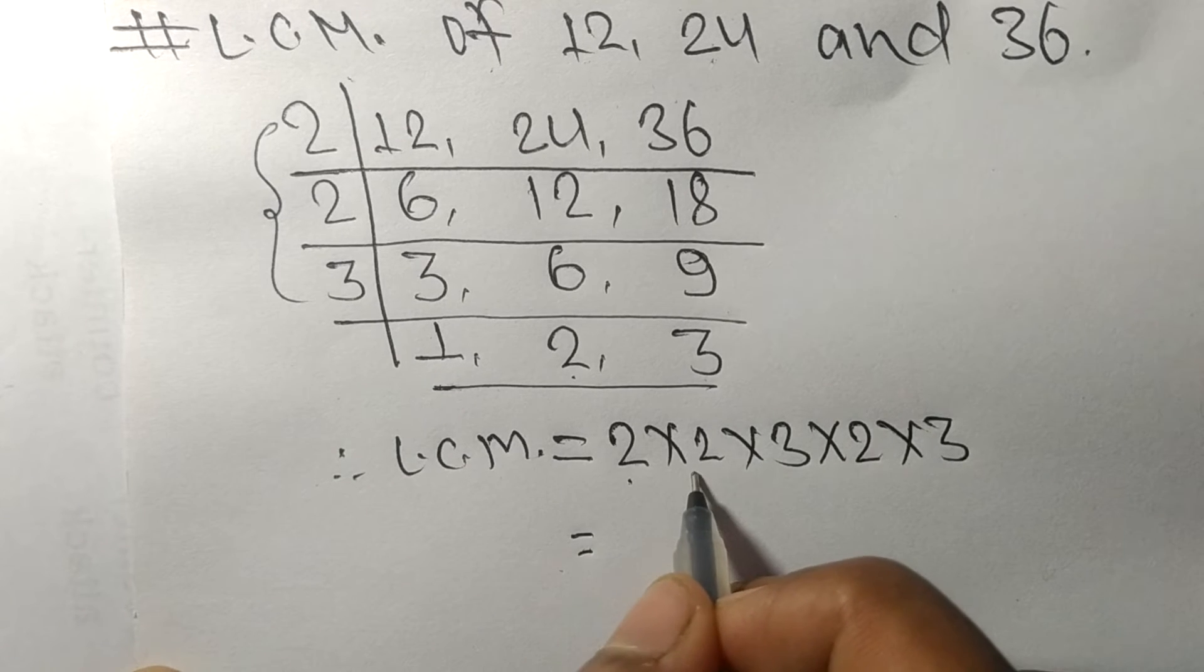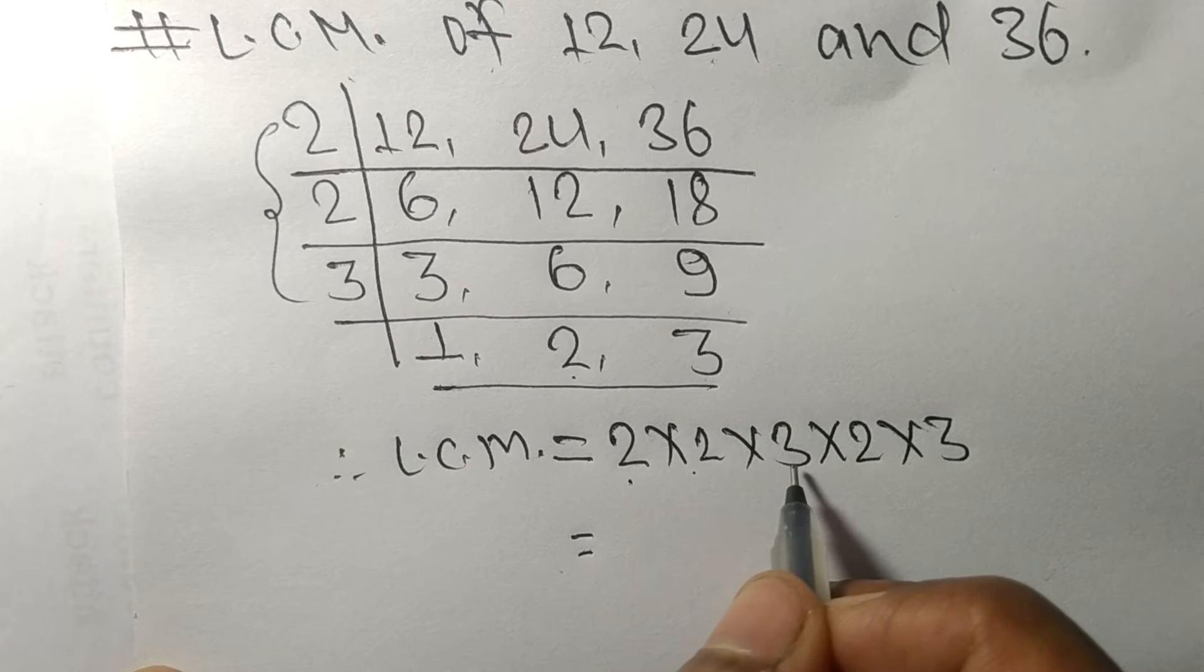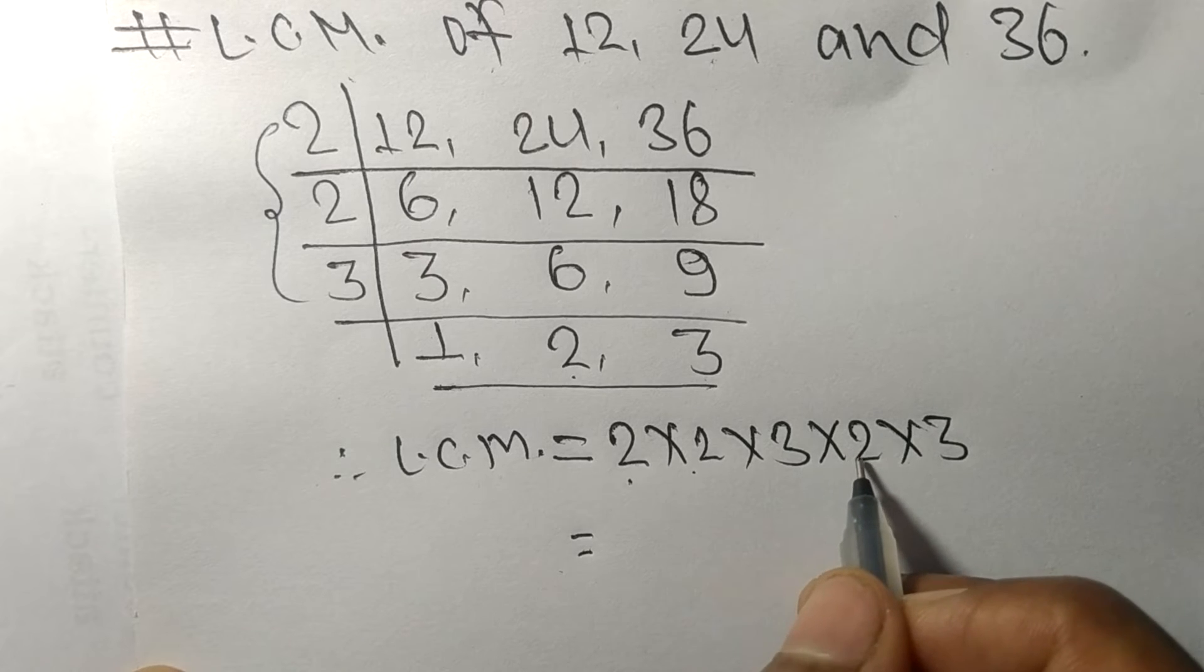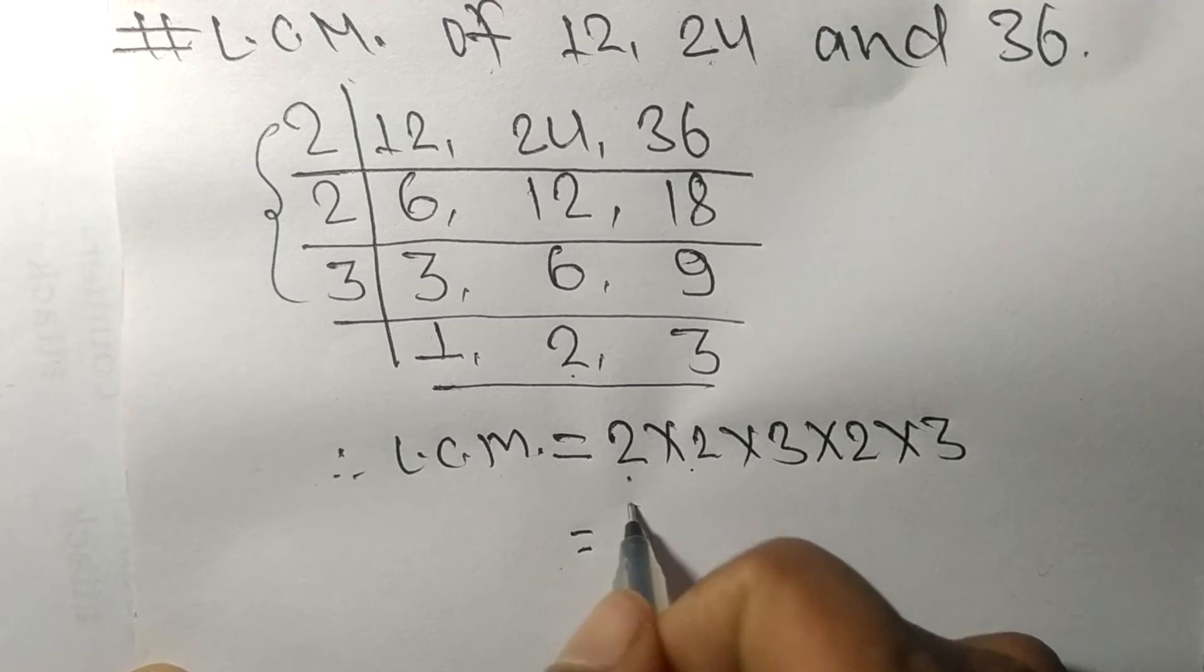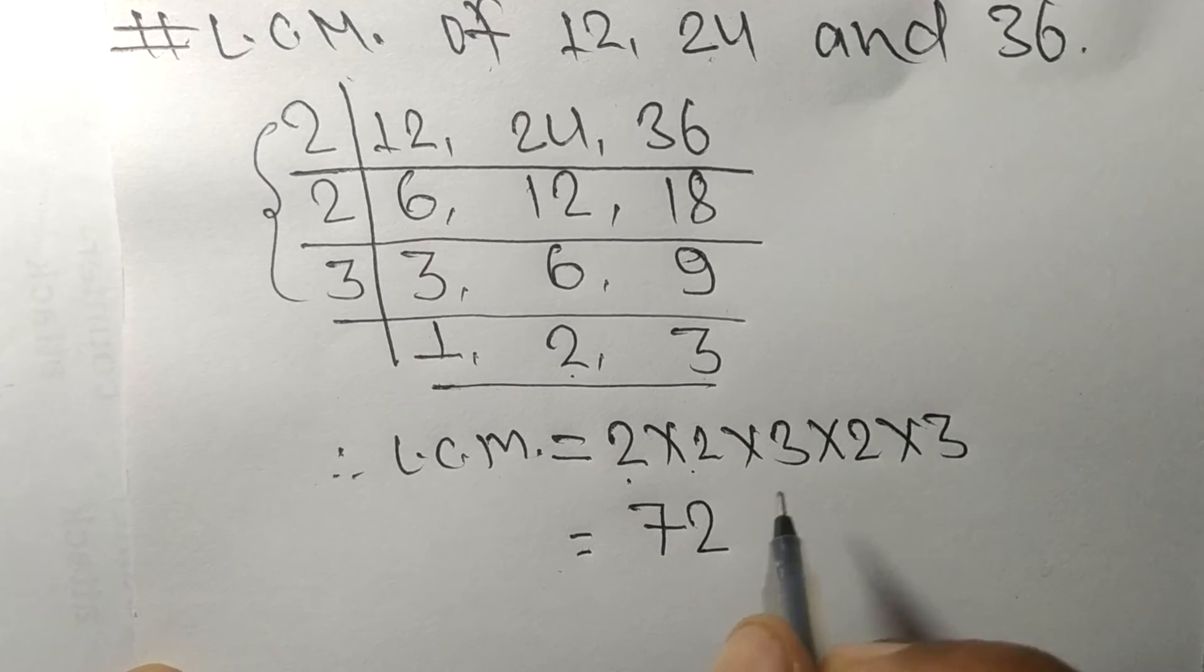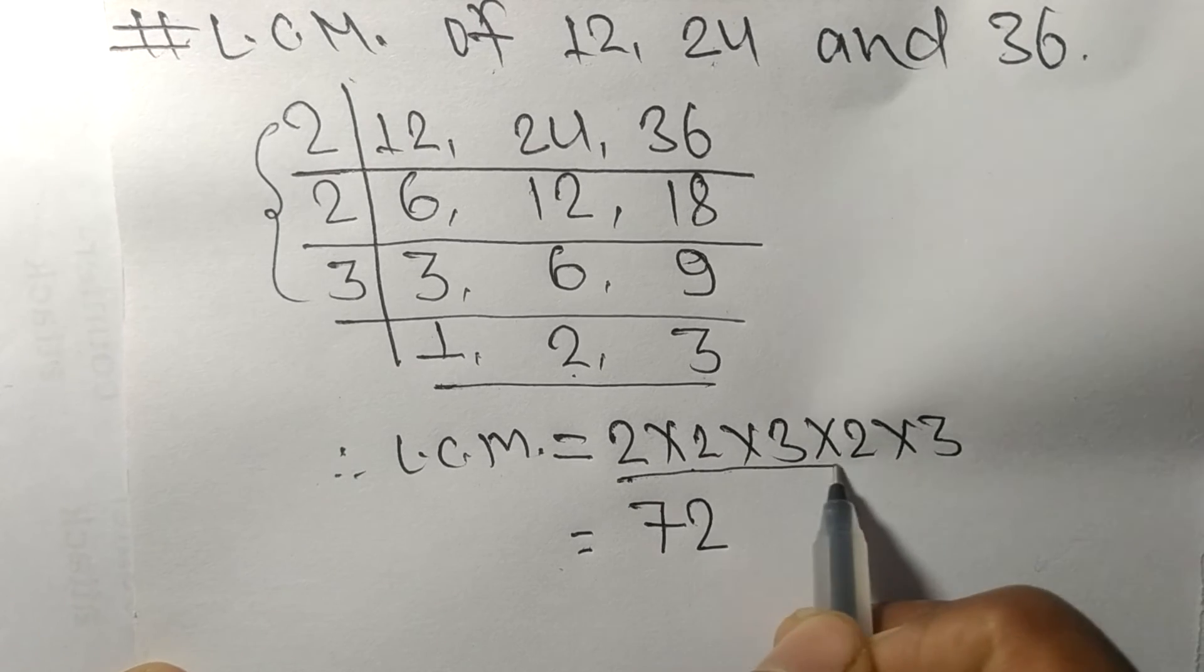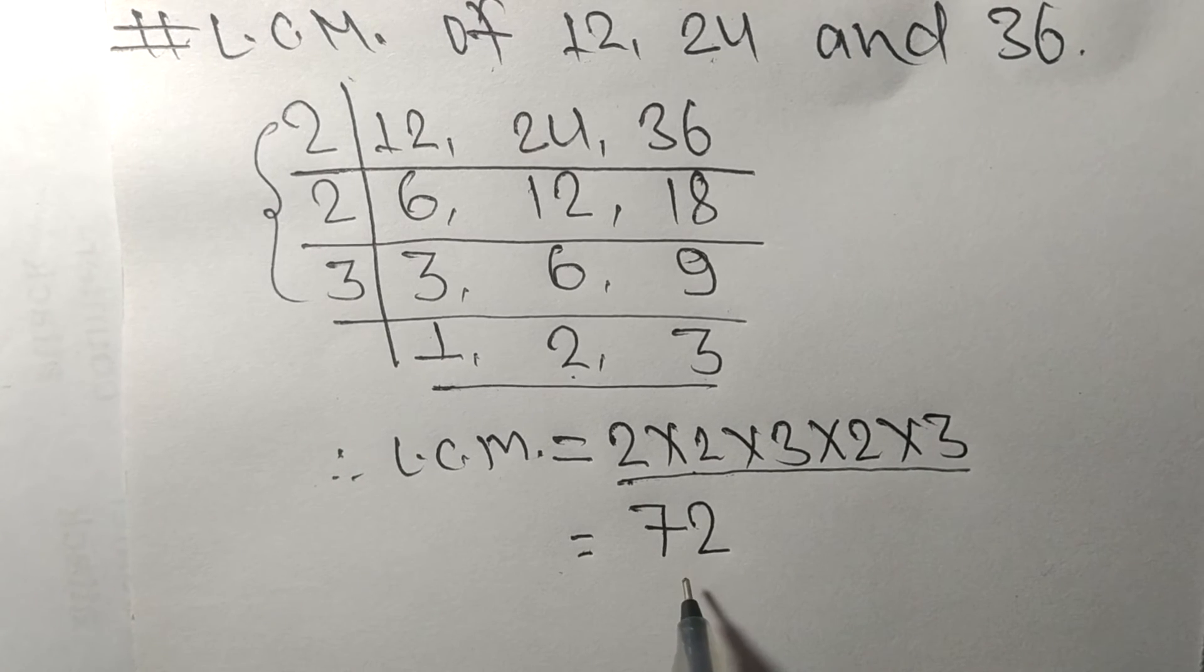2 times 2 means 4, 4 times 3 means 12, 12 times 2 means 24, 24 times 3 means 72. So by multiplying all these numbers we got 72.